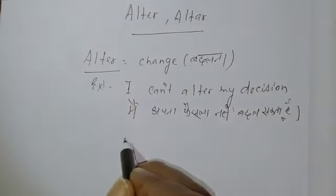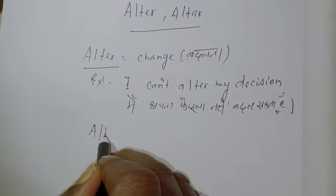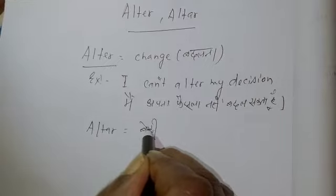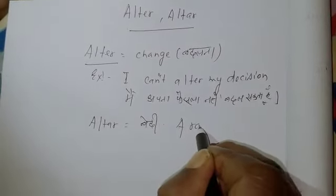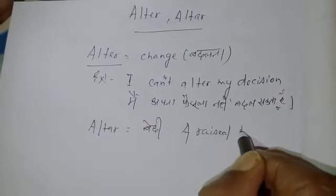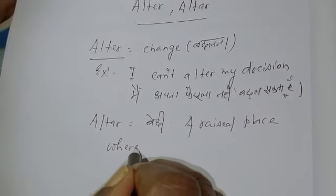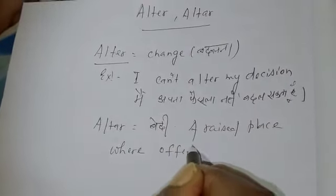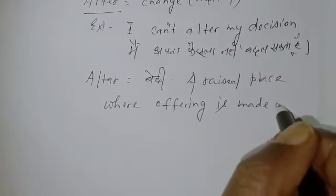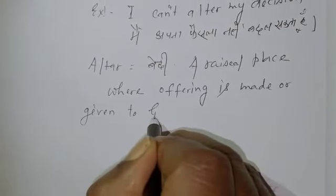The first 'alter' has an 'e' in it. The second word is 'altar' — 'bedi' in Hindi — which in English means a raised place where offerings are made or given to God.